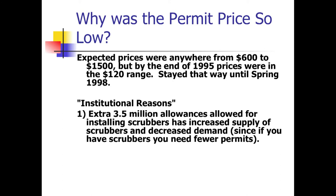So why were permit prices so low? There were estimates of $600 to $1,500 per ton, but prices were in the $120 to $150 range.